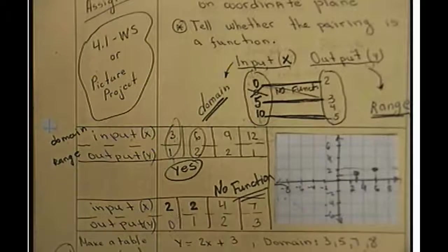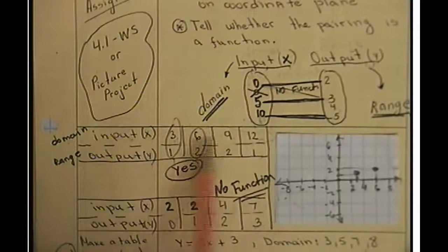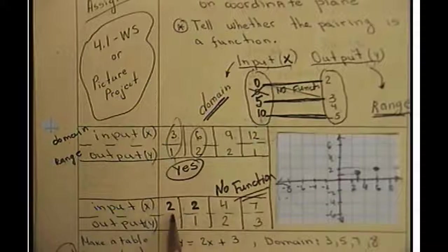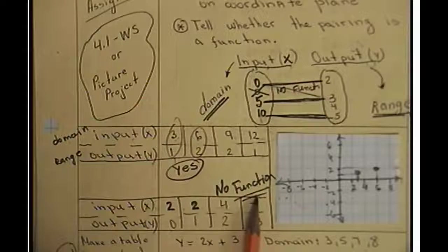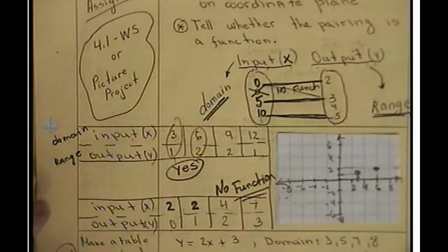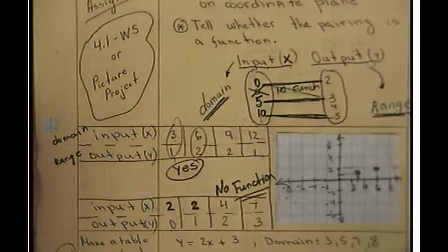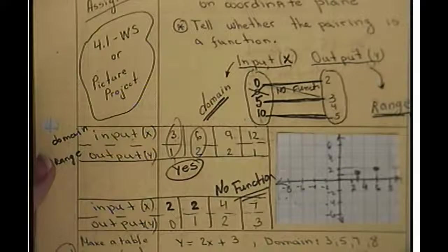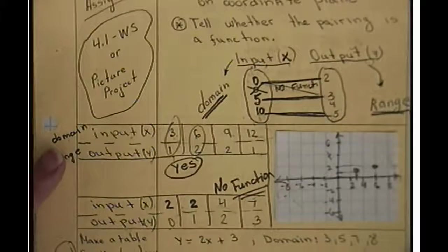So when you have a given table, first thing, make sure x values are all different. If x values repeat, we have no function, we don't graph it. Awesome. So pause the video to finish what I just said. Replay if you need to. Otherwise, if you are ready, you can just move on with me.